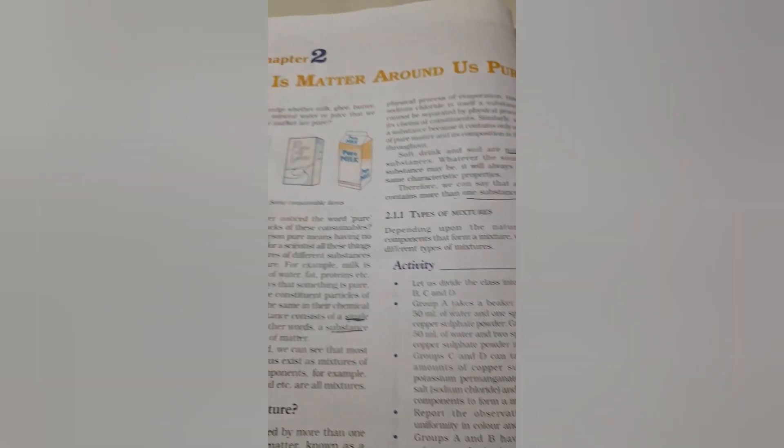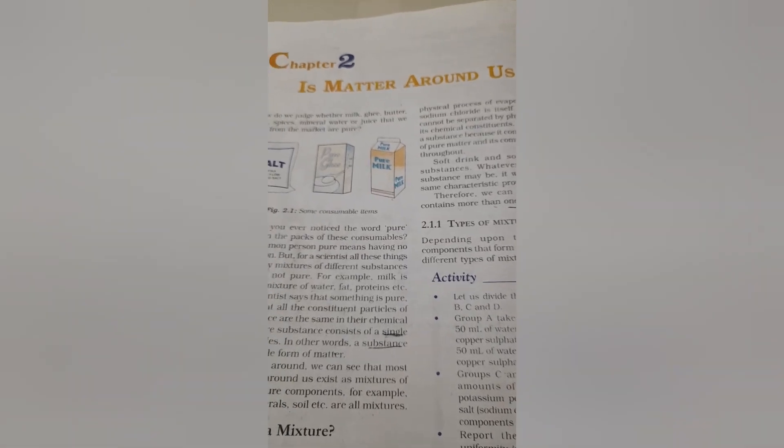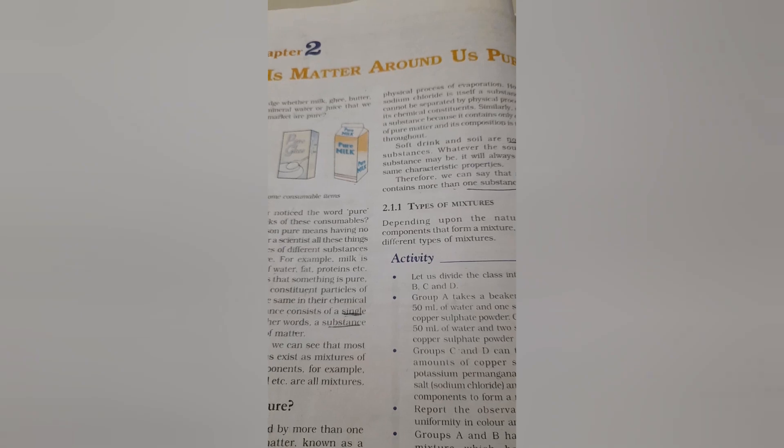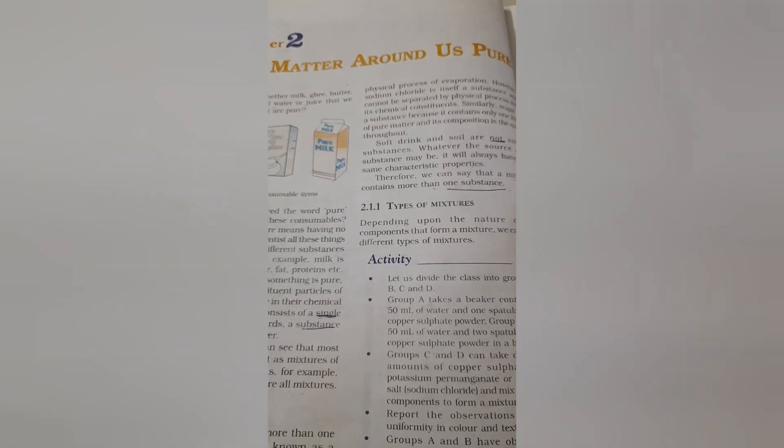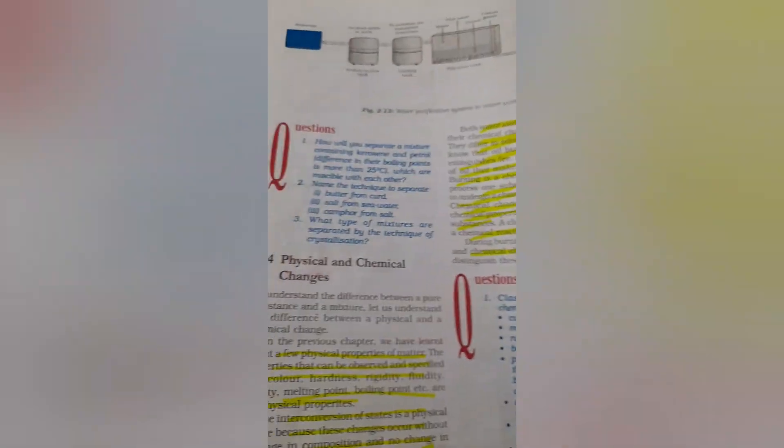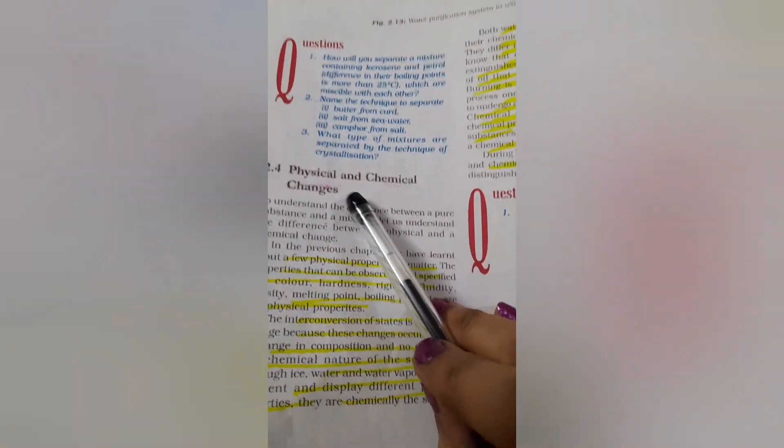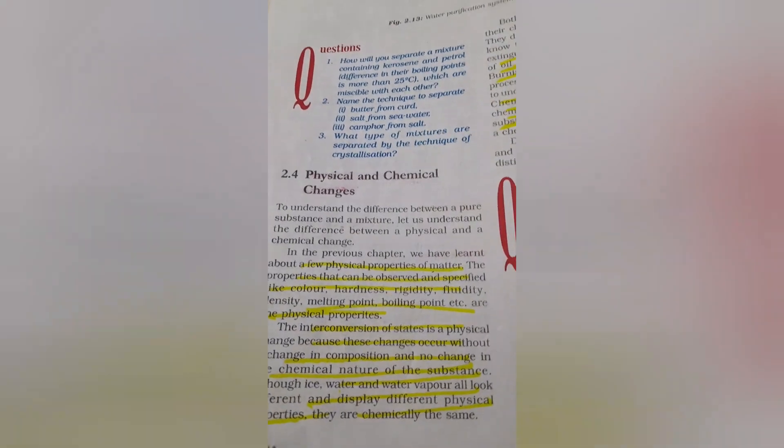All of you know that we were doing NCERT class 9 chapter 2, is matter around us pure, and we have already completed the major part of the lesson. Today we are going to do physical and chemical changes.